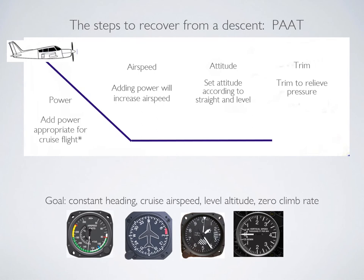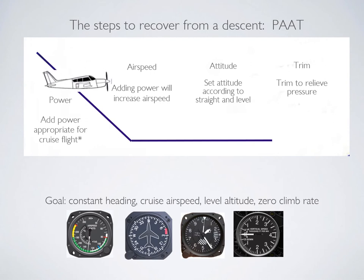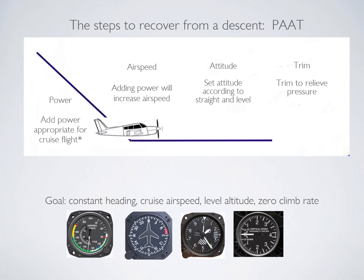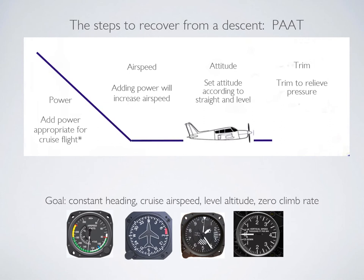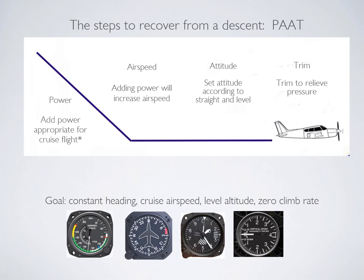To recover from the descent: first, add cruise power and carb heat off. You'll likely need to add forward pressure on the control column to check the nose lift and find your cruise attitude, then trim to hold it. Your goal should be cruise speed — let's say 90 knots — constant heading, no change in altitude, and VSI at zero.